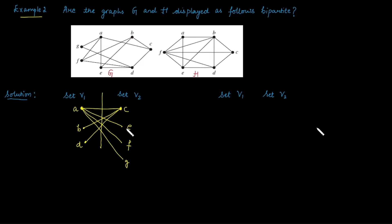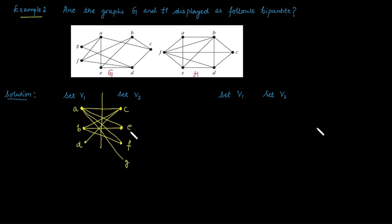Next, take vertex B from V1. B is adjacent to F, E, and C. C is already in the opposite set. B is connected with F, and F is already in the opposite set. B is also connected with E, and E is already placed in the opposite set. All adjacencies are consistent.